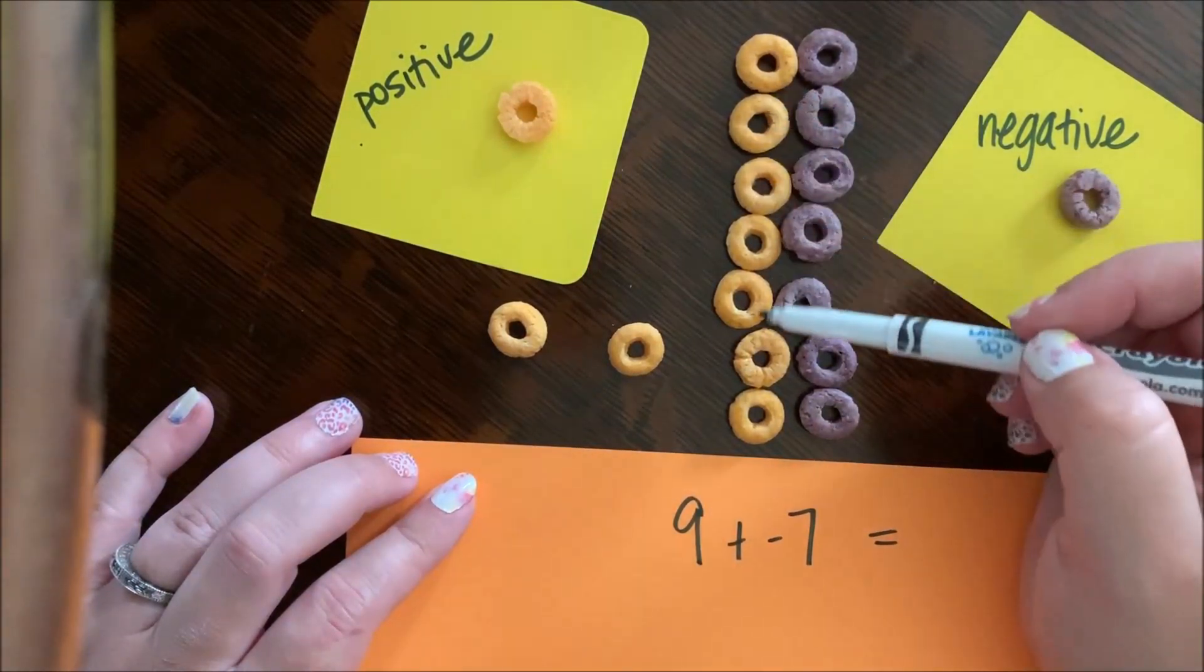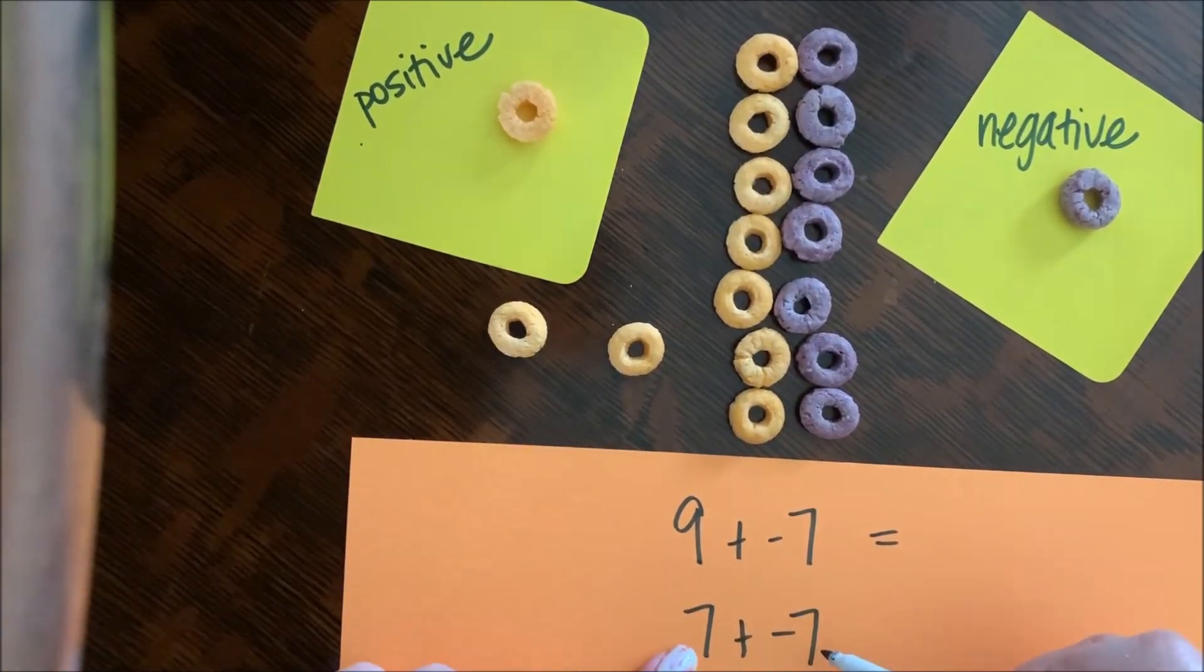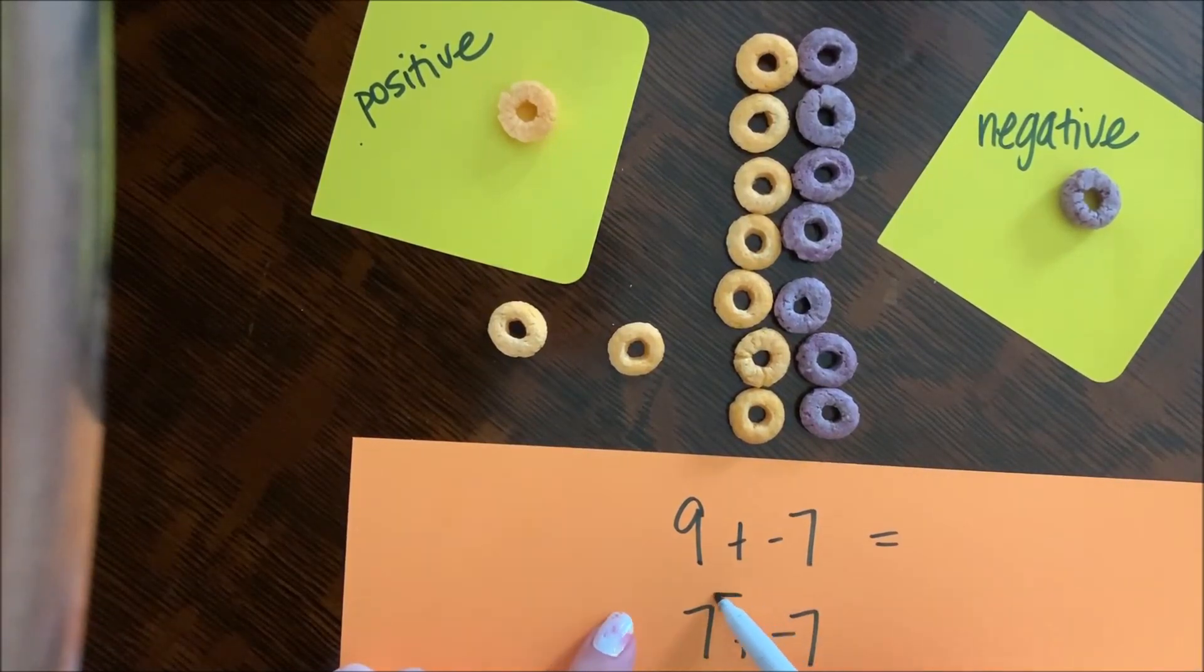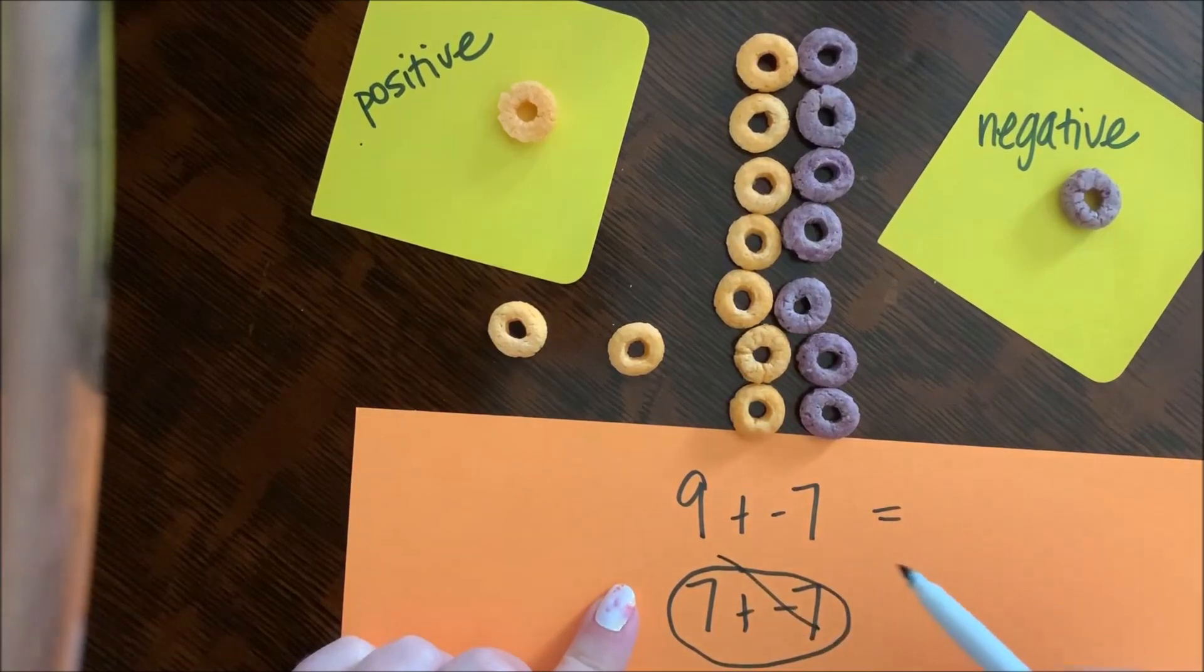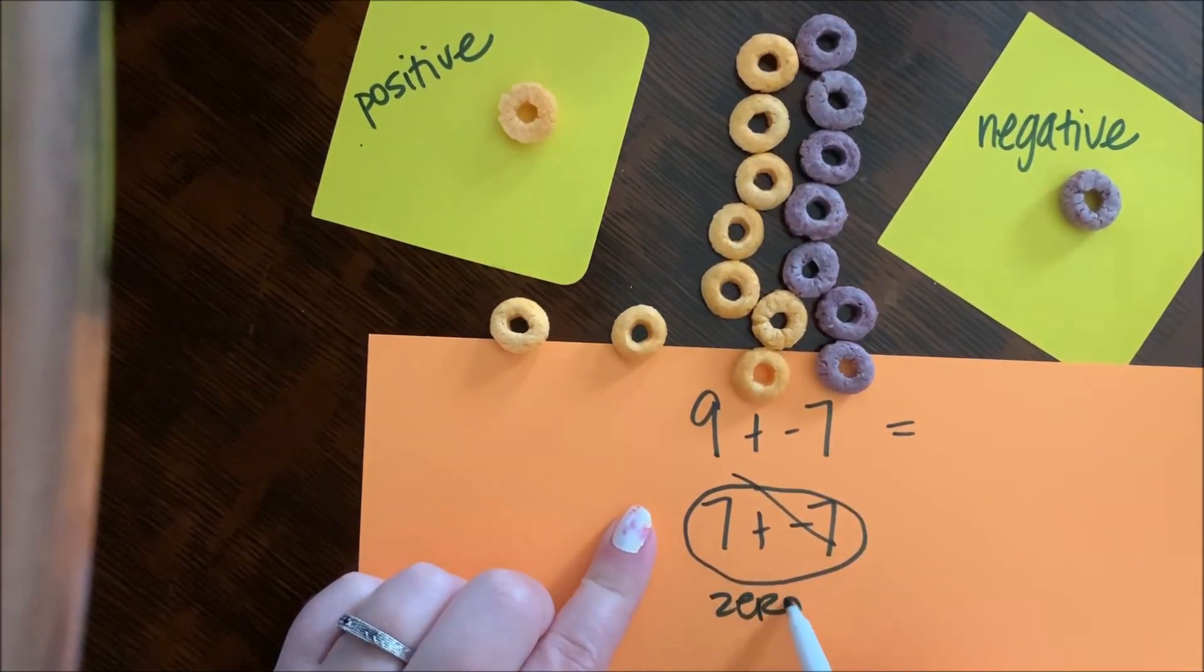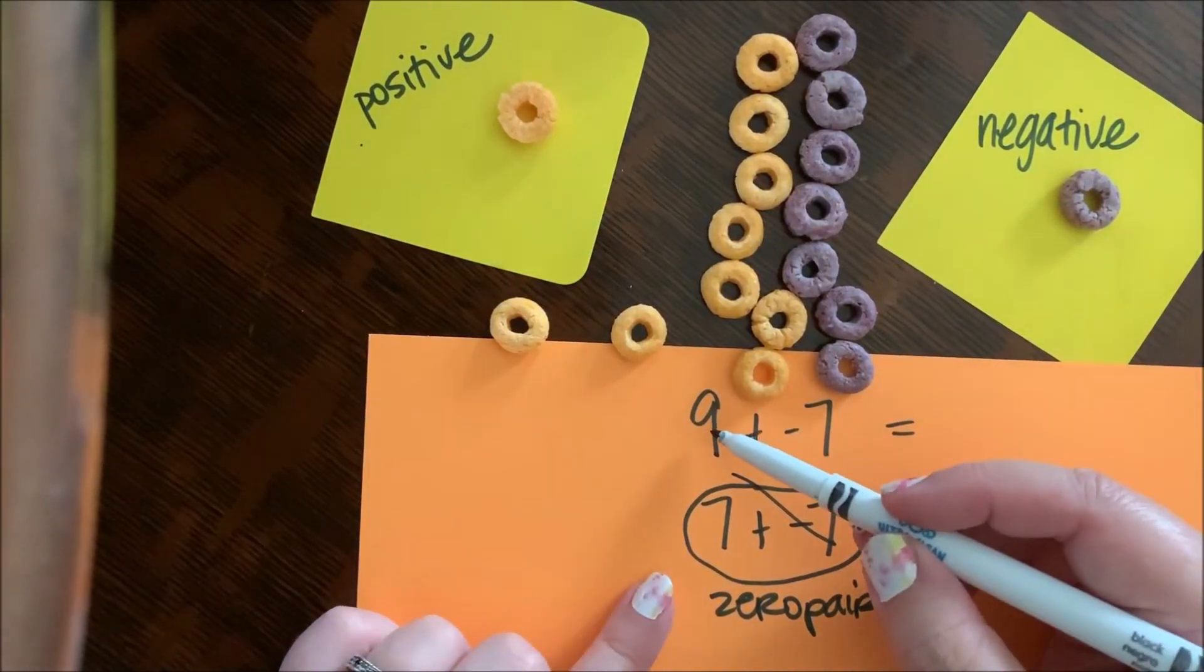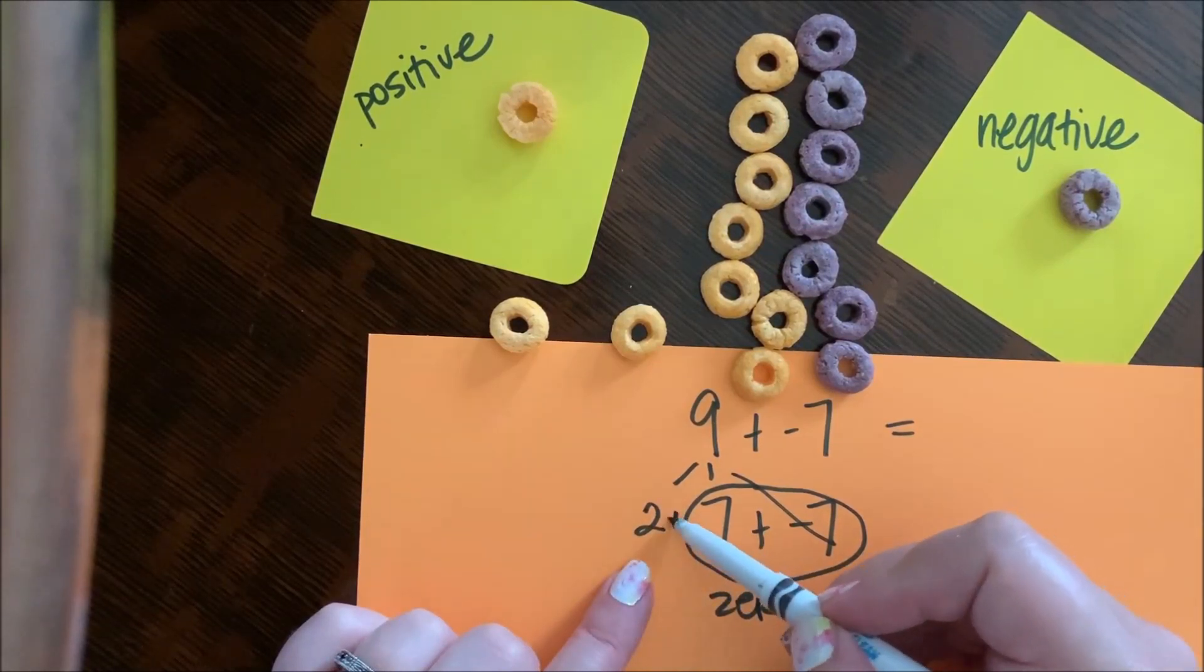So what I have here is seven positives and seven negatives. That gives me a zero pair. And remember, this nine is made up of two and seven.